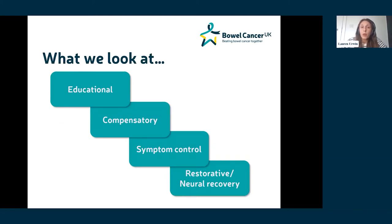When we work with people to support CIPN, there are a range of different therapeutic components we might use. Most commonly we use these in combination, but sometimes we focus more on a specific component depending on the individual's needs. What we know works best is an individualised approach, because everyone is very different — how people experience the symptom differs, and what helps one person doesn't necessarily help the next.